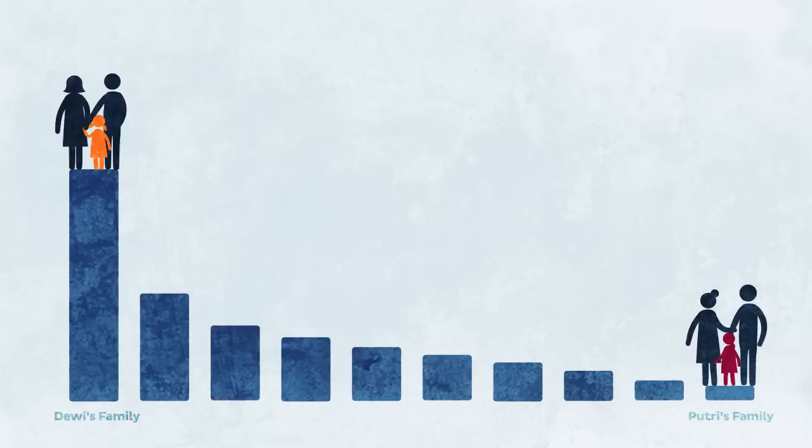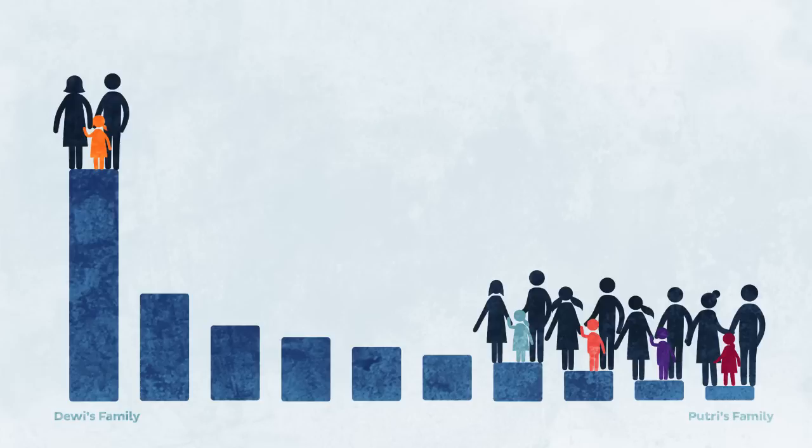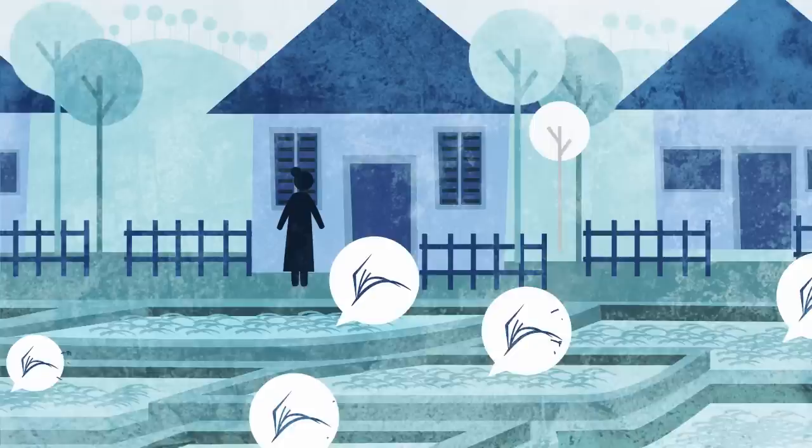Now, what if we told you that Putri's story doesn't only apply to the bottom 10%. Another 68 million Indonesians in the bottom 40% of households are not much better off. It doesn't take much for them to slip into poverty. A bad harvest, a lost job, an unexpected illness.